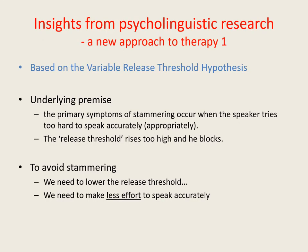If we block on a word, it means the release threshold for that word is set too high. So in order to reduce the likelihood of blocking, we need to bring its release threshold down to a lower level. One way of doing this is by making less effort to speak it clearly and accurately. It's important to understand this point because most stammerers tend to put more rather than less effort into clearly speaking the words they expect to block on. So making less effort on such words means doing the opposite of what you've probably been doing up until now.